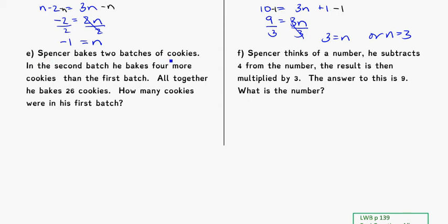Spencer bakes 2 batches of cookies. In the second batch he bakes 4 more cookies than the first batch. Altogether he bakes 26 cookies — how many are in the first batch? Altogether means batch 1 plus batch 2 equals 26. We don't know batch 1, so call it N. In the second batch he bakes 4 more than the first, so batch 2 is N plus 4.